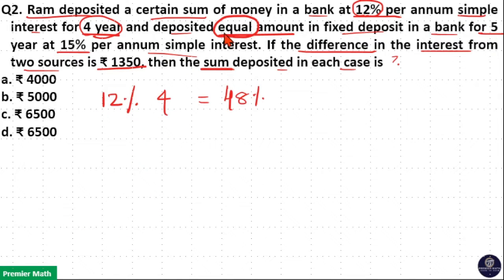In another bank, he deposited an equal amount for 5 years at a rate of 15%. So 15% for 5 years equals 15 × 5 = 75%. After 5 years, he will get 75% simple interest.